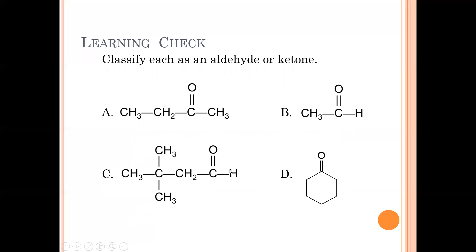Example C: the carbonyl carbon is at the end, so this is an aldehyde. Carbon one is always the aldehyde. Counting: one, two, three, four — this is a butanal. But on carbon three we have two methyl groups, so this is 3,3-dimethylbutanal.